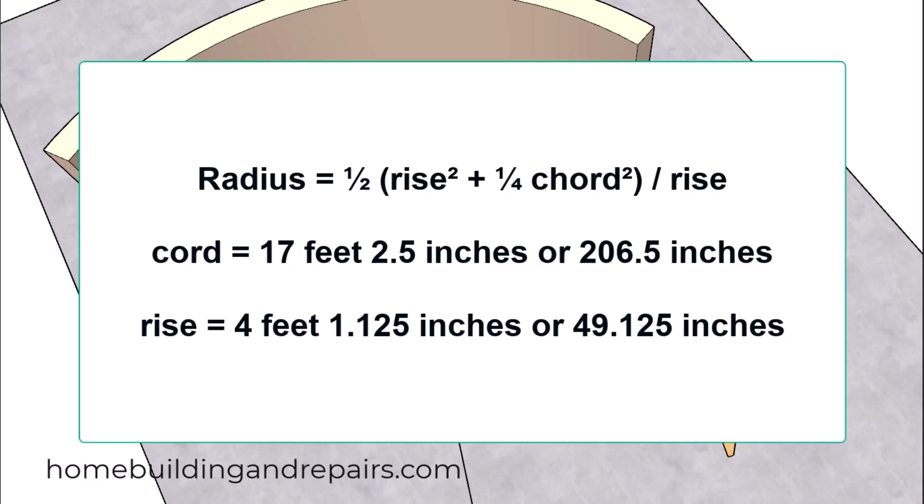Next up, let's take a look at the formula we're going to be using to find the radius. We're going to take half of the rise squared plus a quarter times the cord squared. Then we're going to divide that by the rise. Our cord length was 17 feet, 2.5 inches. If we break that down into inches, we're going to have 206.5 inches. Since you either need to use feet or inches to make your calculations, we're going to use inches in this video. So we're going to end up with a rise height of 49 and an eighth inches or 49.125 inches.